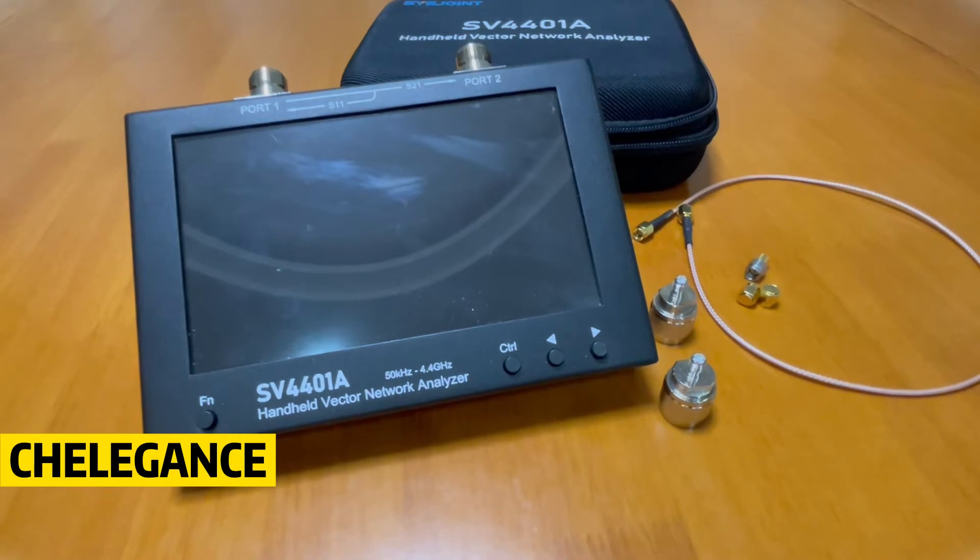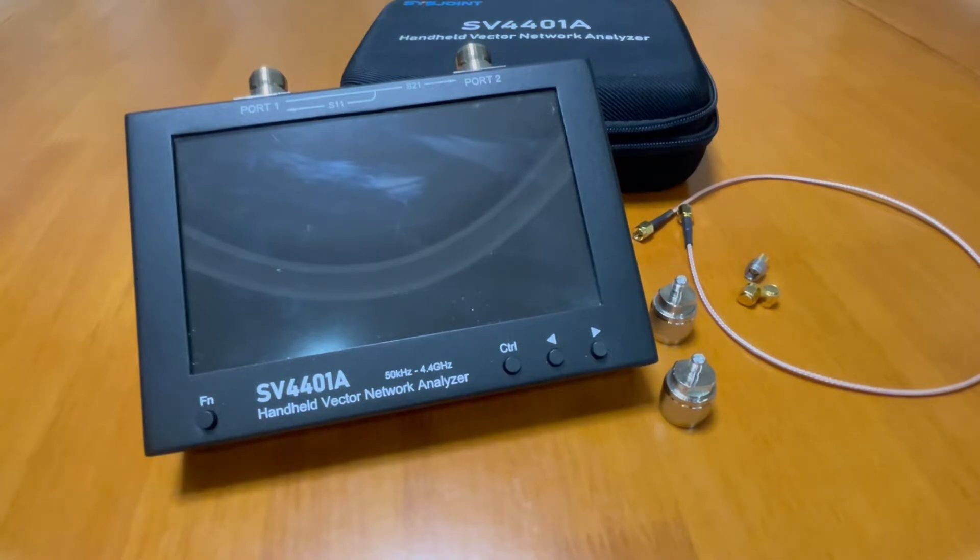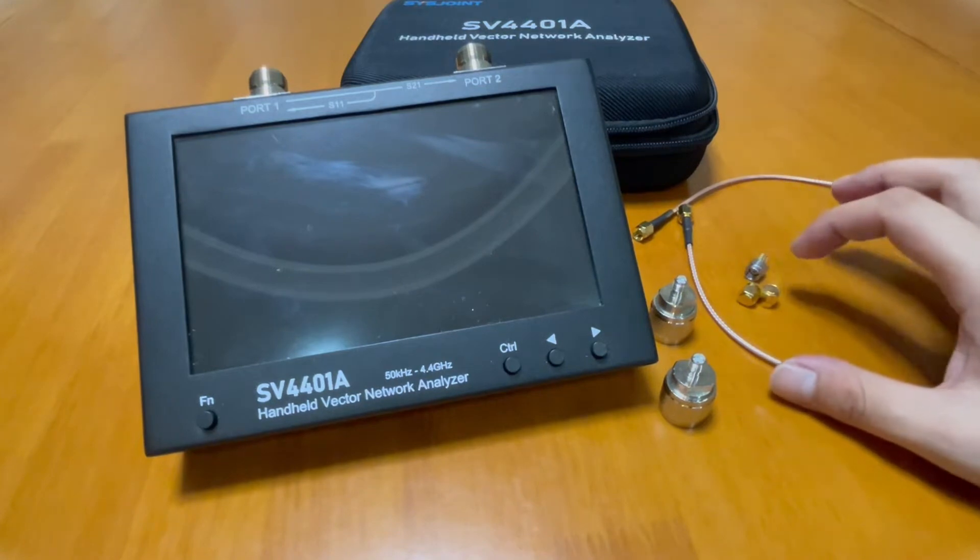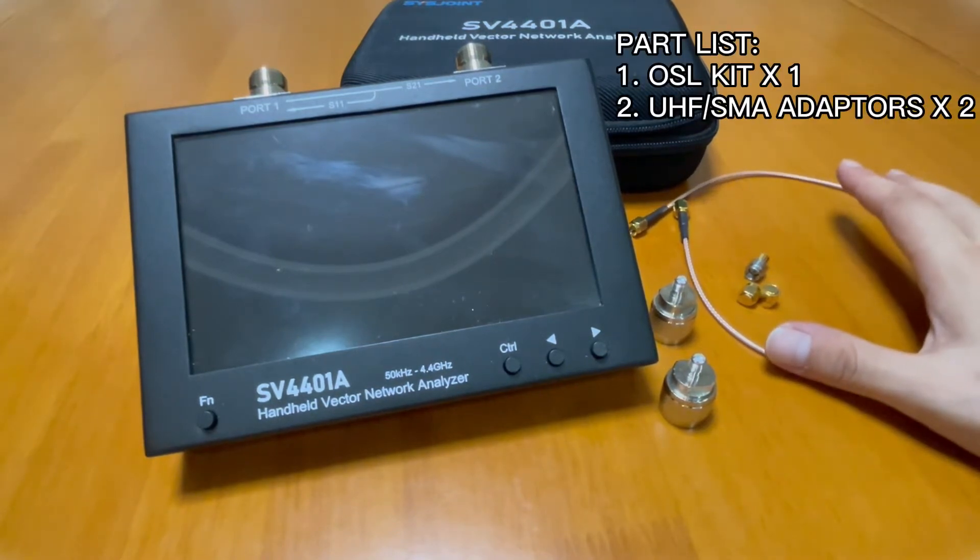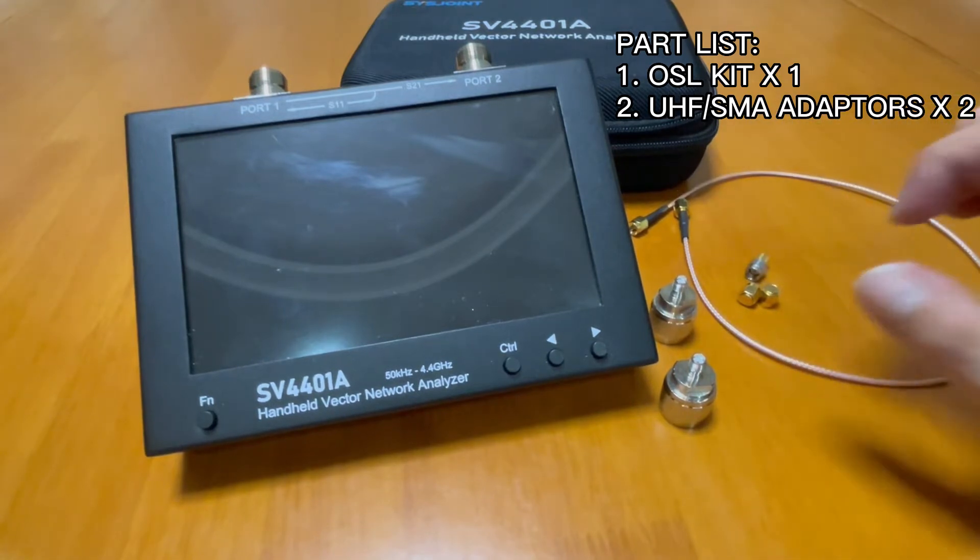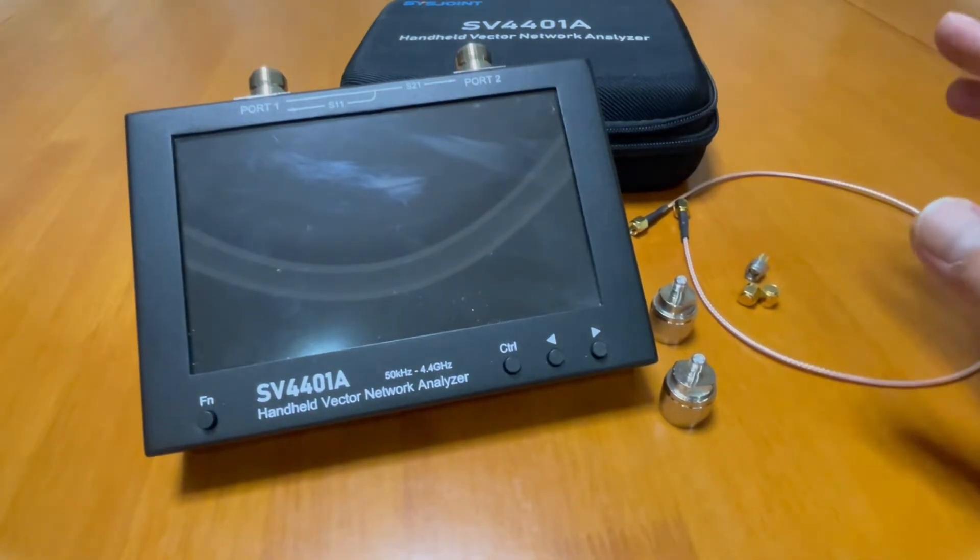To perform a calibration on the SV4401A is quite easy. The first thing you want to do is check if you have everything that you need. The OSL calibration kit means the open, short, and load, one cable, and what you need is two adapters. All the things that you need come right out of the kit that you buy.